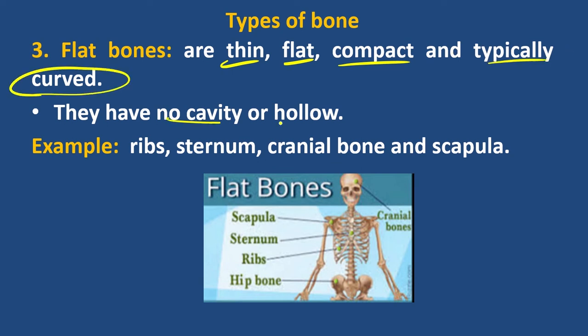Flat bones have no cavity or hollow. For example, ribs, sternum, cranial bones, scapula — these are flat bones. Irregular bones include the vertebrae.